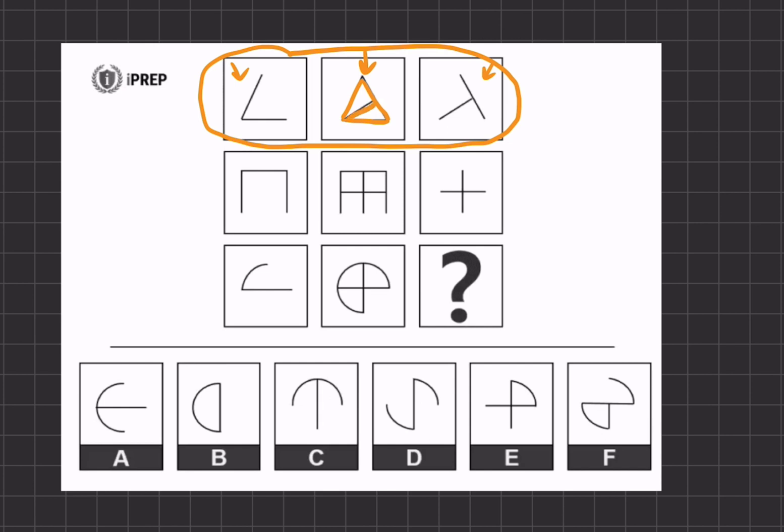Let's take a look at our second row. Same thing. If we take our figure on the left, it makes up this part of our final shape. And if we take the figure on the right, it makes up this part of the final shape, completing it.